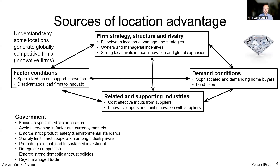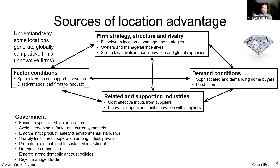Complementing the four forces is the role of government, which plays a very large role in supporting all four forces. Government provides incentives, institutions, rules and regulations that enable easy transactions and facilitate exchanges. It also provides basic infrastructure — both hard infrastructure like roads and airports, and soft infrastructure like institutions and education — enabling everyone to perform much better.